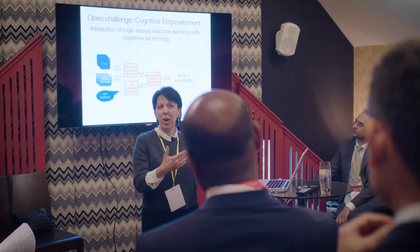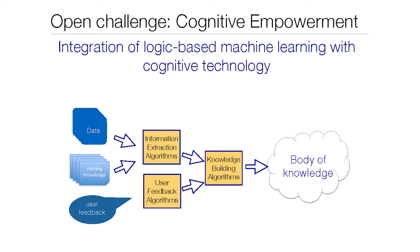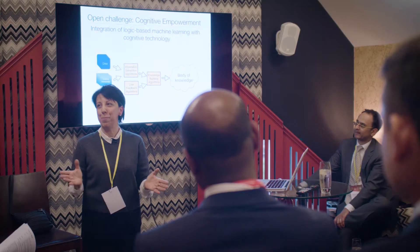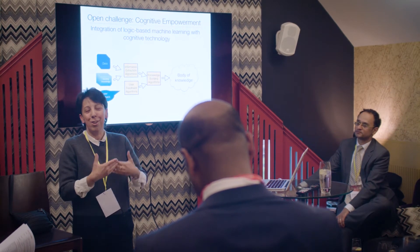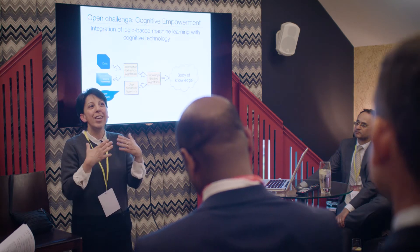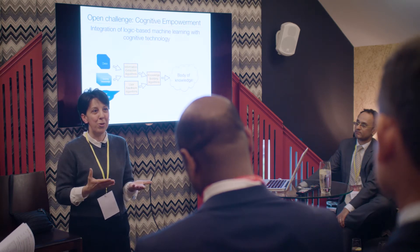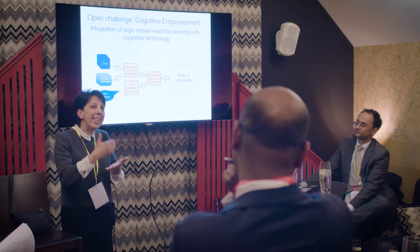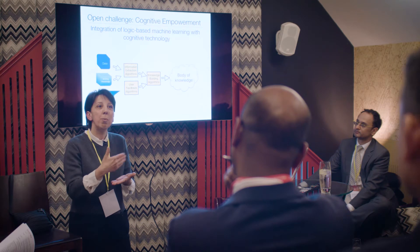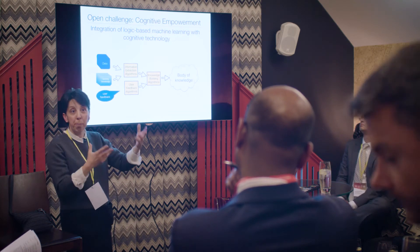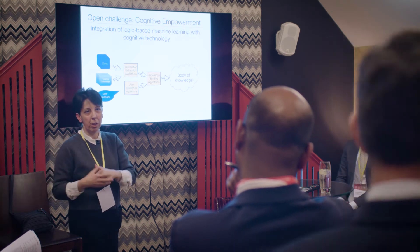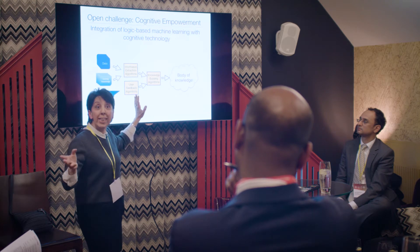Where does this take us? The area I'm currently working on is cognitive empowerment. We don't want to replace humans — I come from that angle. For serious decisions, interaction with humans is important. What we want to do is build cognitive systems able to support humans in their tasks, using machine learning — or combinations of statistical and symbolic logic-based machine learning — to make those systems smarter.